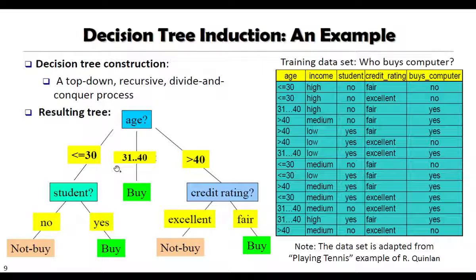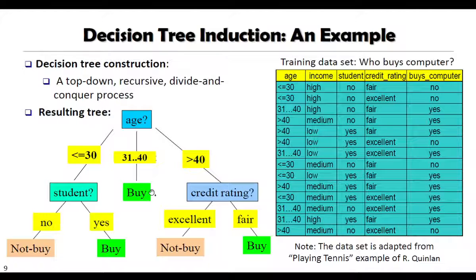Once we form the tree and validate it to a certain accuracy, if a new tuple comes in, we check the value of that particular attribute — for example, age. If that particular value is between 31 to 40, that means that particular person will buy the computer, or we can say there is a high probability that a person having age between 31 to 40 will buy the computer. This is how we use the decision tree to take decisions.